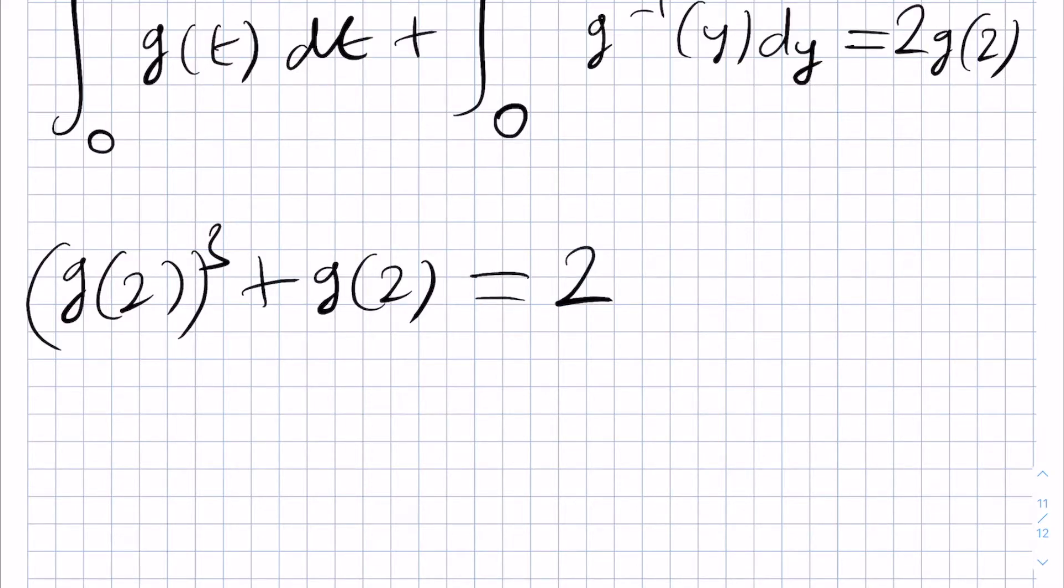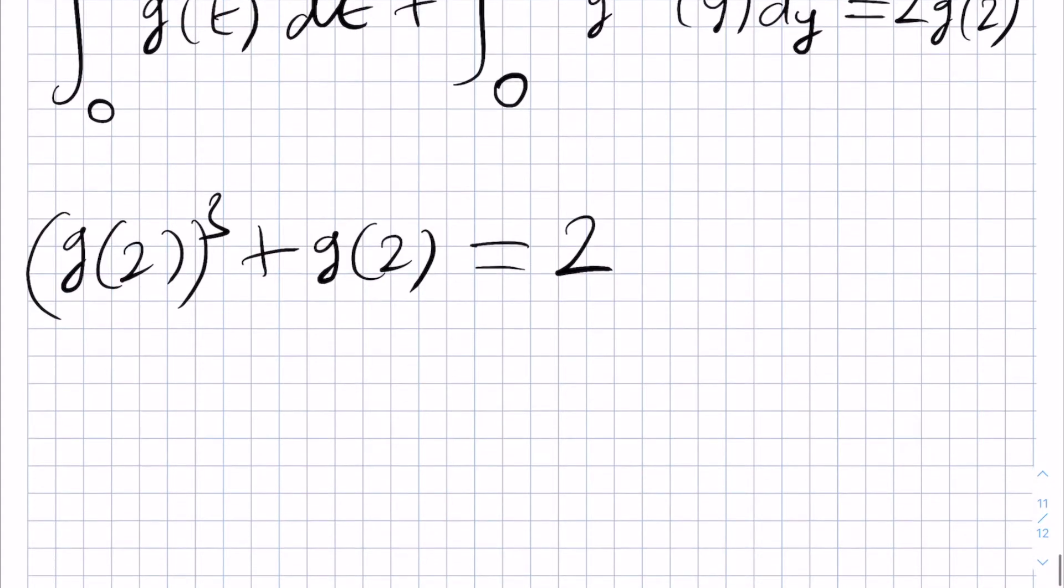we have that g(2) cubed plus g(2) is equal to 2. We can factorize this if we notice that g(2) equals 1 is a solution because then we have 1 plus 1 equals 2.